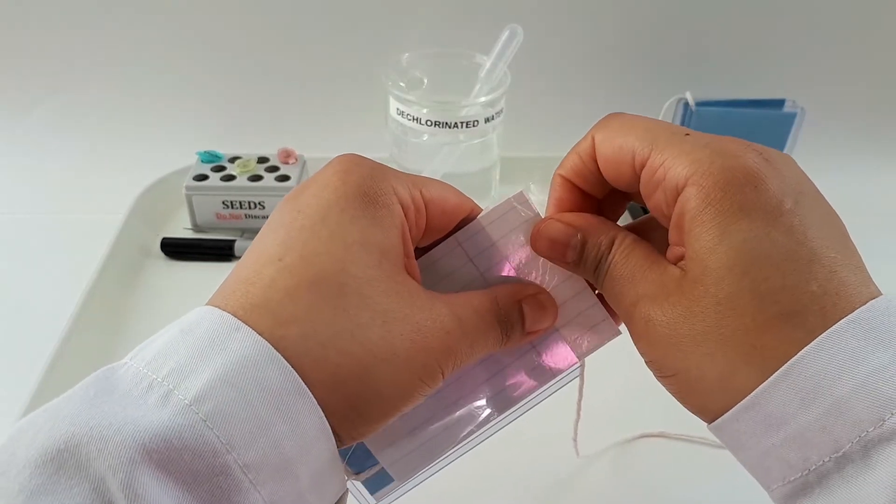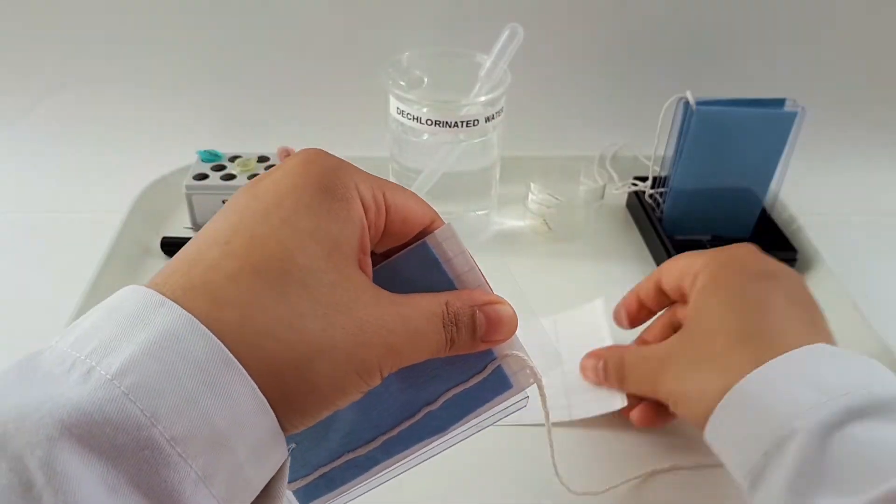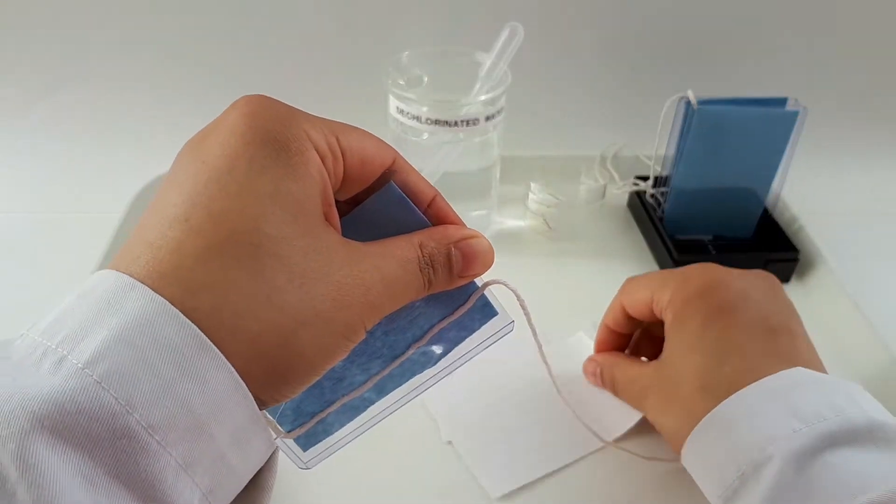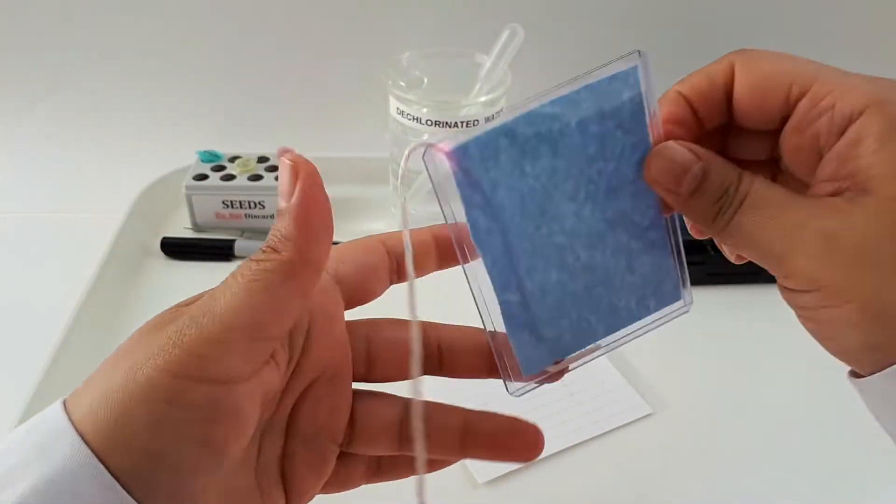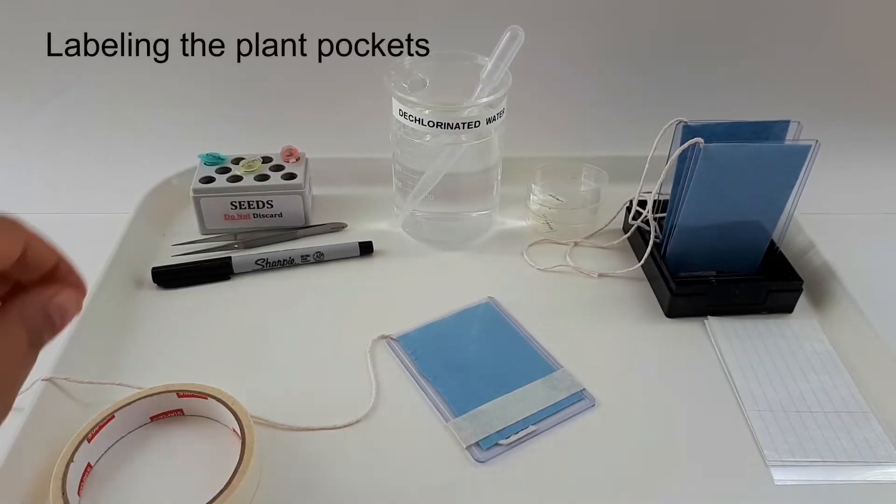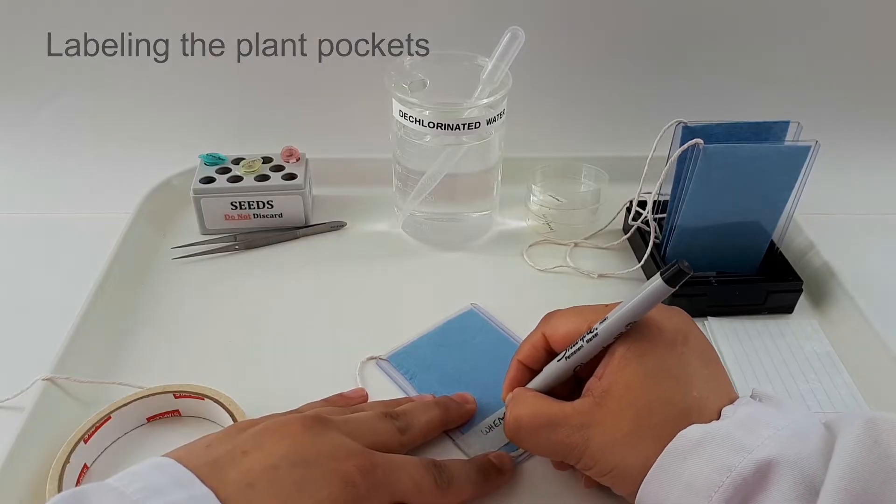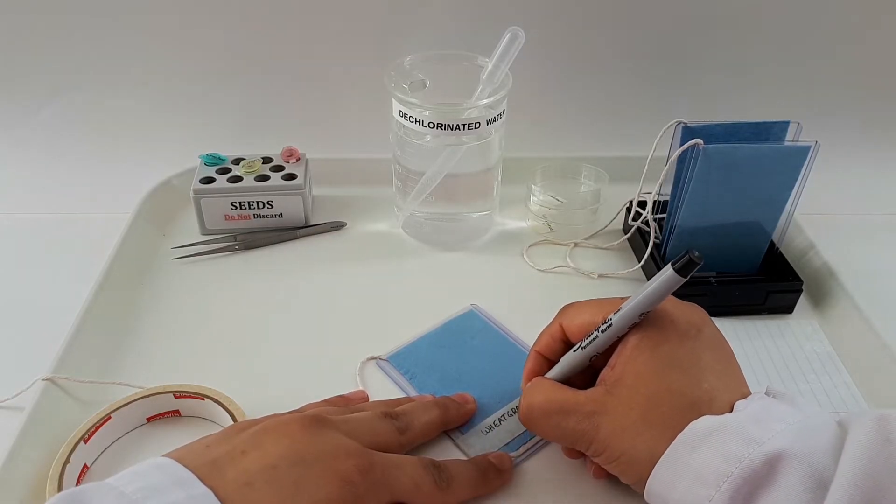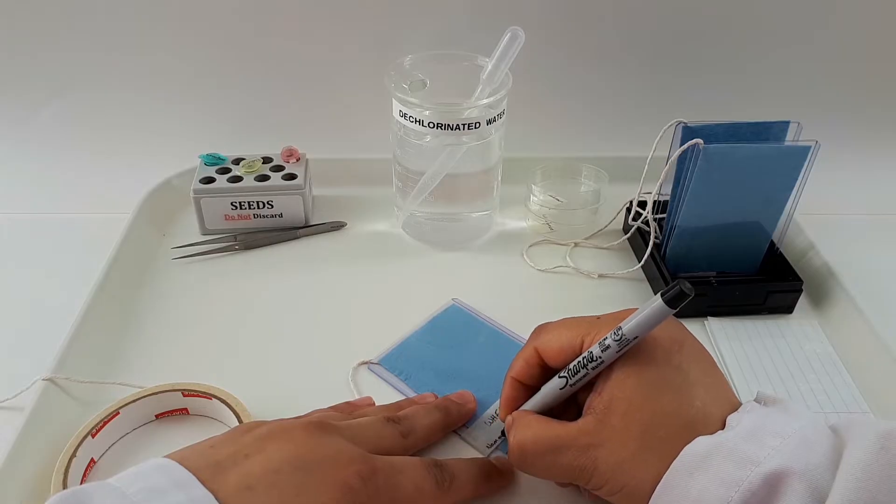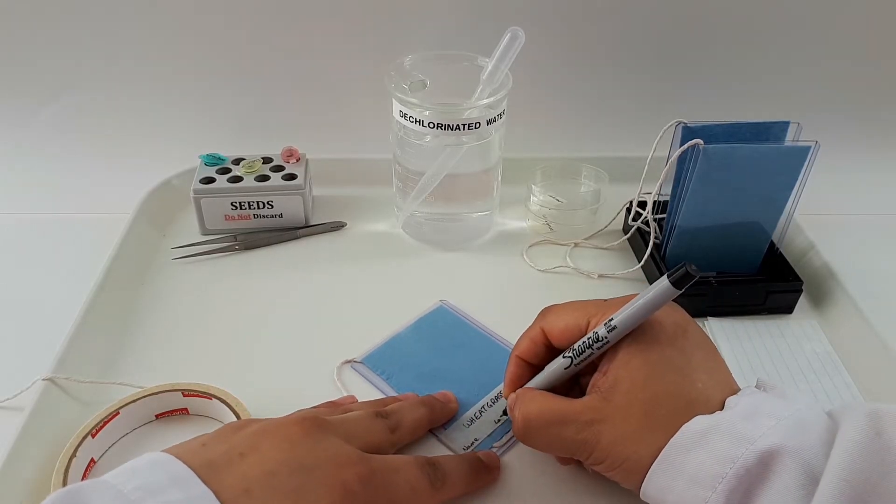Carefully remove the laminated note cards while leaving the shop towel and the string in the card holder. Using the tape and markers provided, clearly label the front of your plant pockets with the seed type, your group name, your lab section, and your TA.